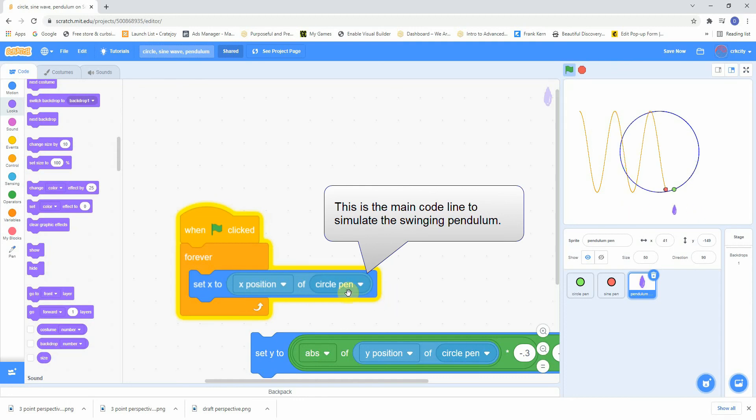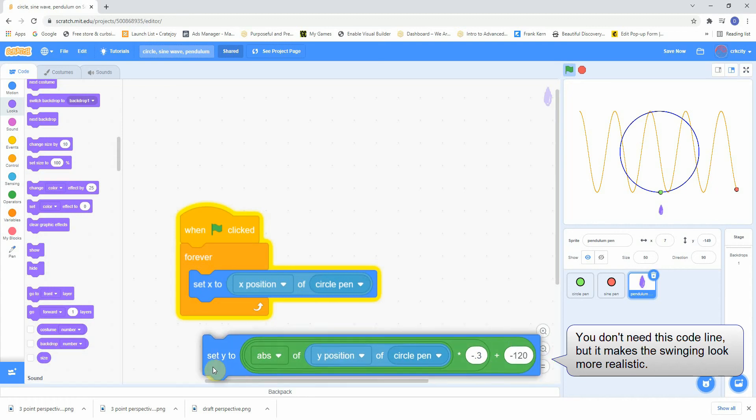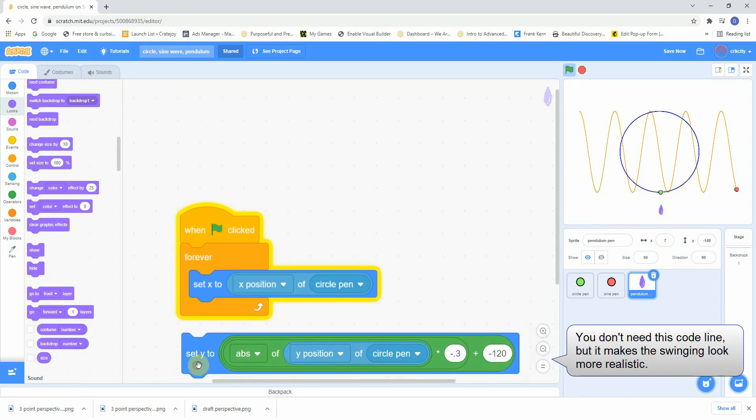When you do that, you get this little pendulum motion at the bottom. It slows down at the extremes and goes fastest in the middle. Same with the sine wave. It slows down at the top and bottom and goes fastest in the middle. And that's how you characterize the sine wave.